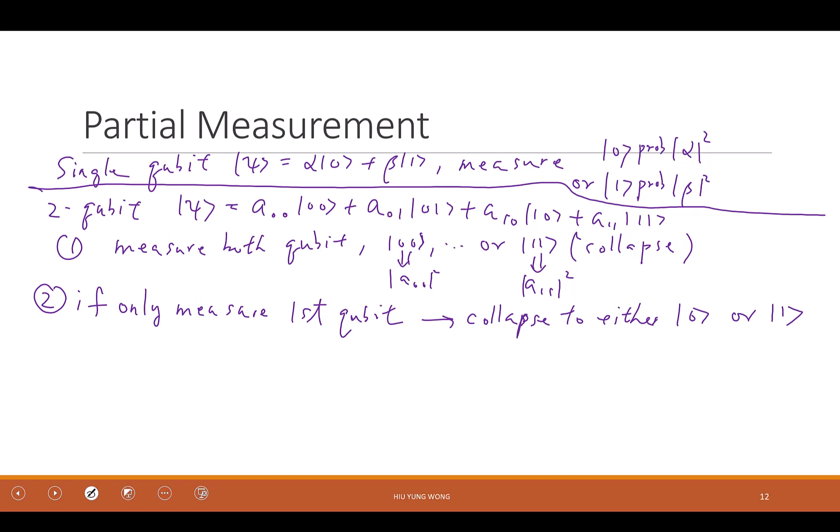Now, what is the probability of getting 0? I'm measuring the first one. What is the probability? No, no, no, I have this equation. It's A0,0 square plus A0,1 square. Do you agree? Can you explain why?